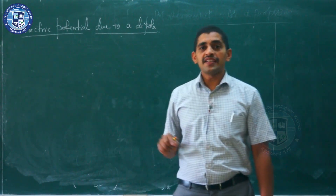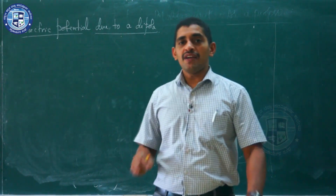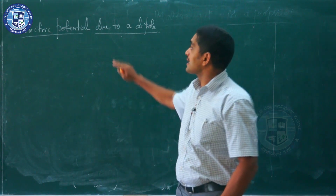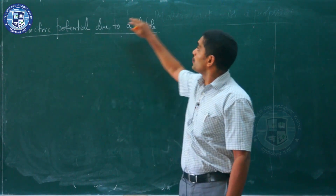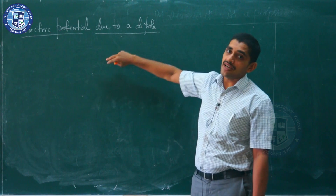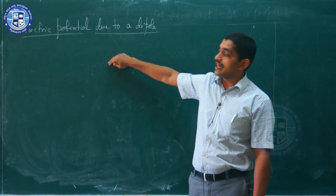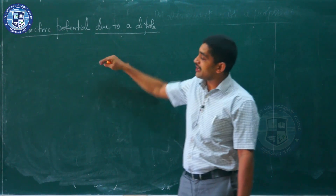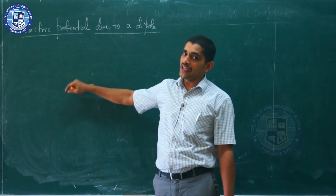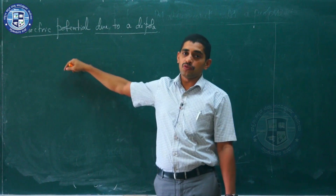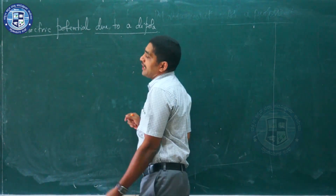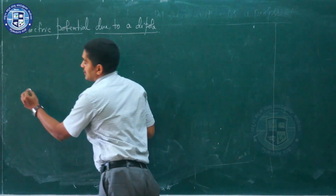In this video, let us derive an expression for the electric potential due to a dipole. In the first chapter, we derived the expression for the electric field at the axial point and the equatorial point due to a dipole. Now, let us try to get an expression for the electric potential.